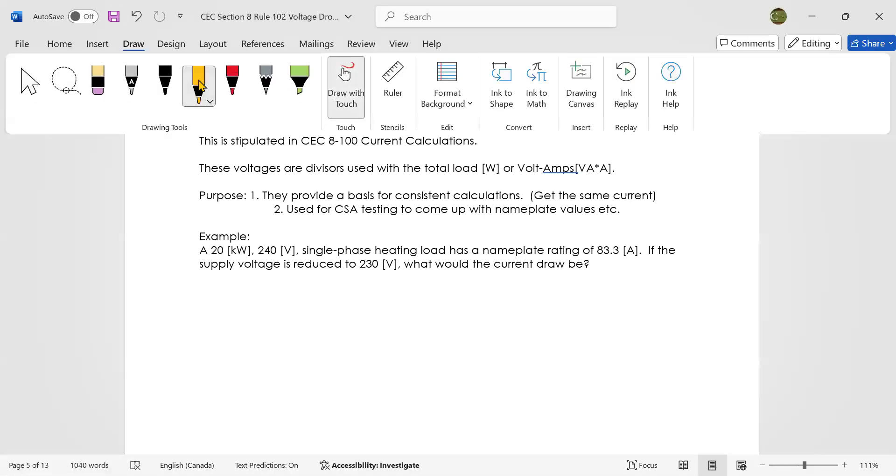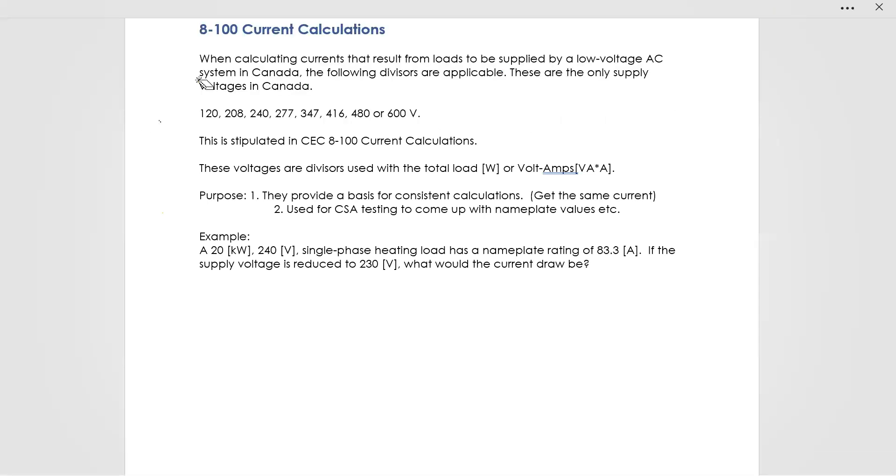So this rule says—let me read you the rule. When calculating currents that result from loads expressed in watts or volt-amps to be supplied by a low voltage AC system in Canada, the voltage divisors to be used shall be 120, 208, 240, 277, 347, 416, 480, or 600 volts as applicable. That's what the whole rule said.